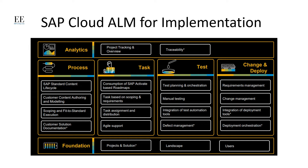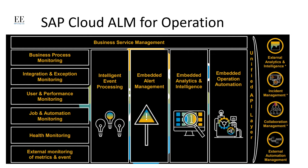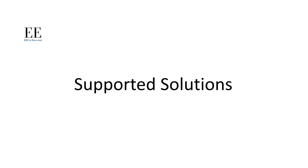Those are the different technical functionalities covered under Cloud ALM for Implementation — the ones marked with an asterisk are planned to be available at a later date. The second category is Cloud ALM for Operations. Once the product is live, you monitor it for issues, identify them, diagnose the root cause, resolve the issue, and then automate the resolution. It includes different types of monitoring functionalities to monitor end-to-end business processes, integrations between multiple SAP and non-SAP applications, system performance, and incident management.